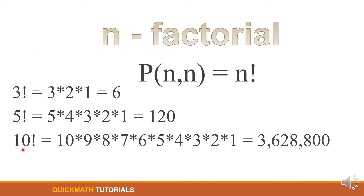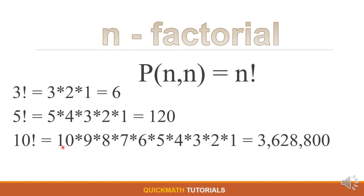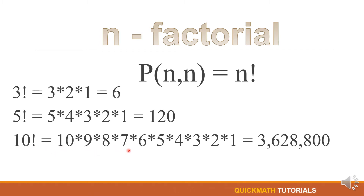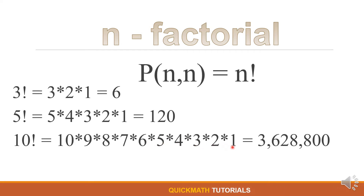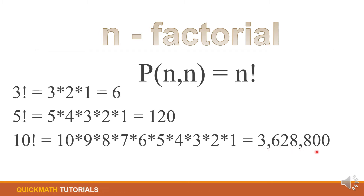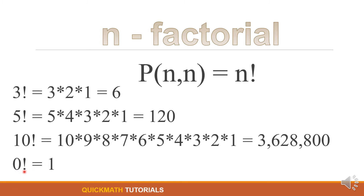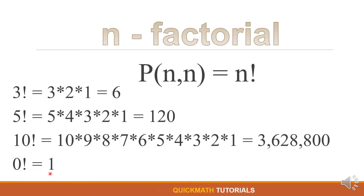We have 10 factorial, which is equal to 10 times 9 times 8 times 7 times 6 times 5 times 4 times 3 times 2 times 1, which is equal to 3,628,800. And lastly, 0 factorial is just equal to 1.